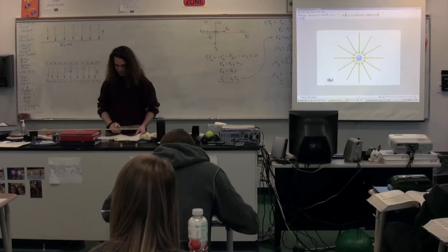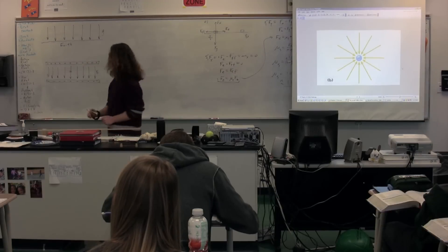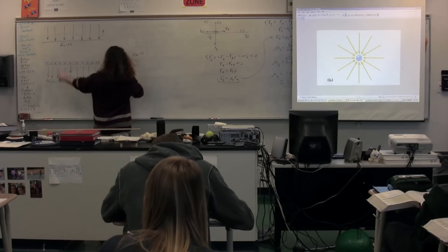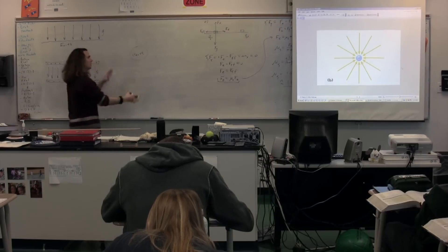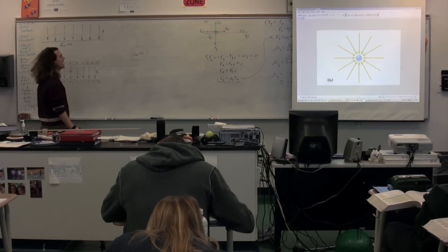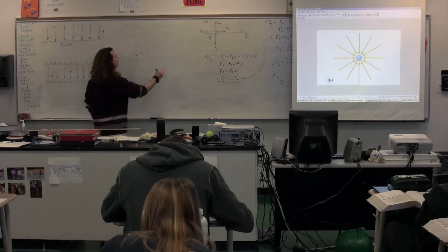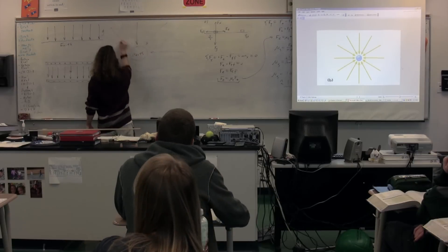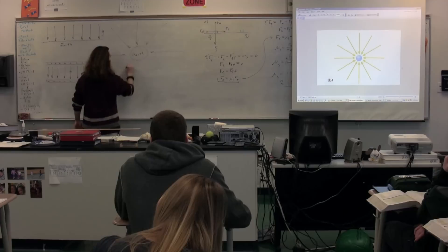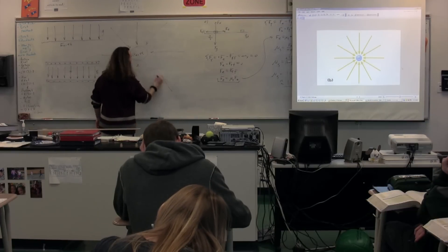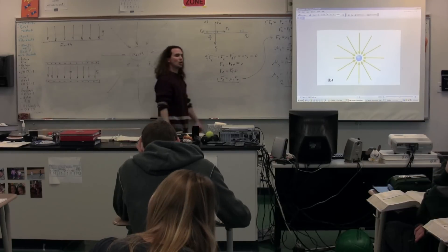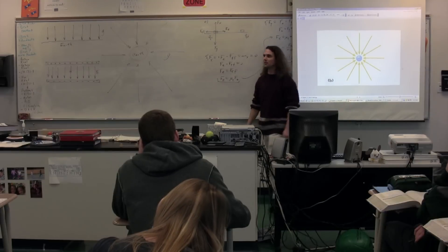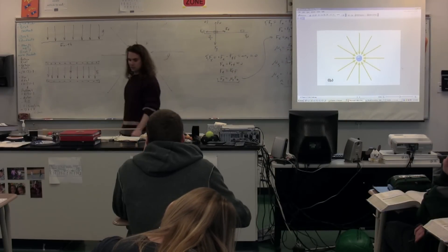If we take a look at the Earth from far away — as if we are a satellite looking out at the Earth — notice that the gravitational field for the Earth looks like this. Notice it's just like the electric field that surrounds a negative charge.